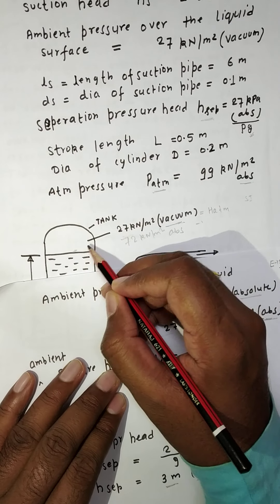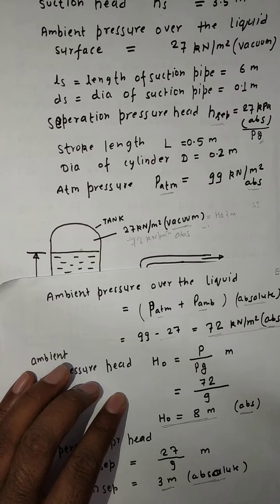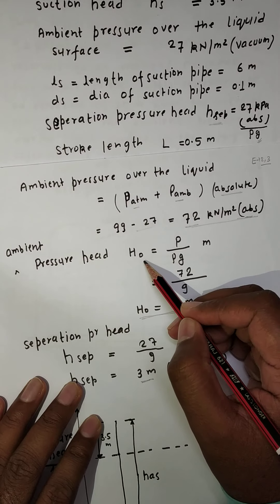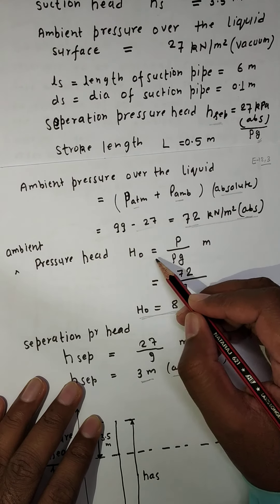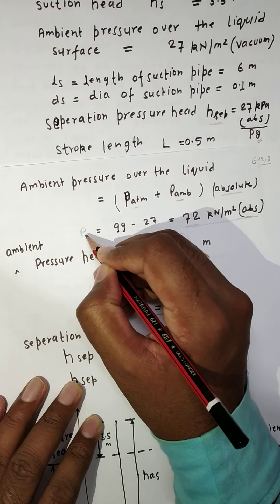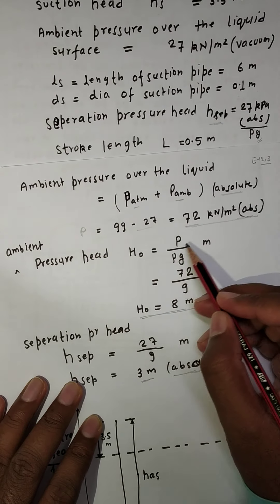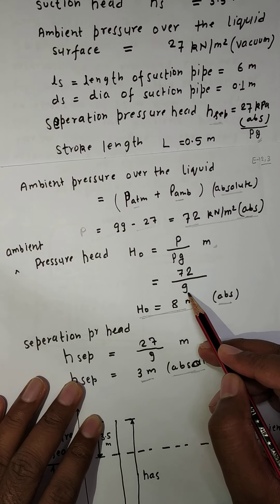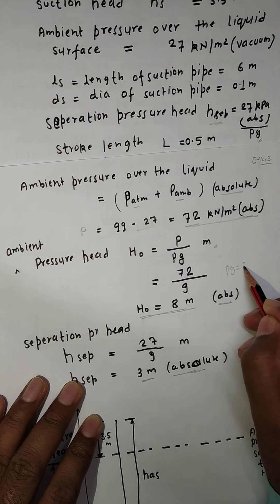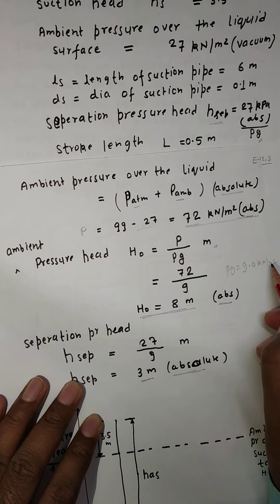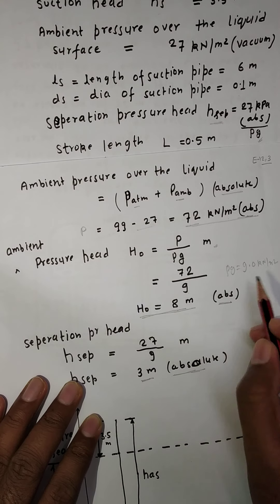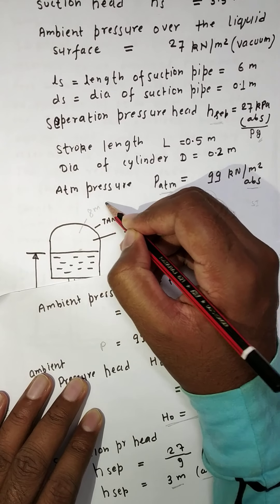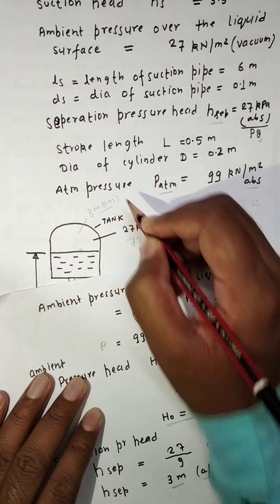Now converting this to meters, the ambient pressure head H₀ = P₀ / (rho × g) = 72 divided by 9 = 8 meters absolute. So the ambient pressure head H₀ = 8 meters absolute.